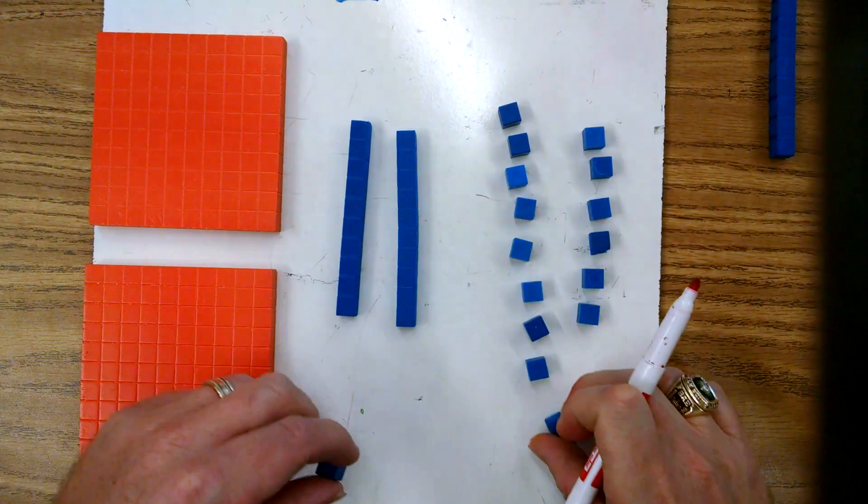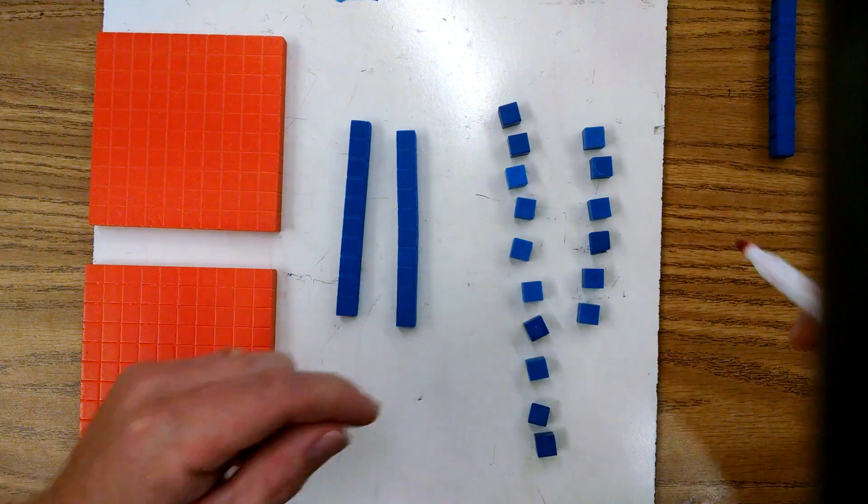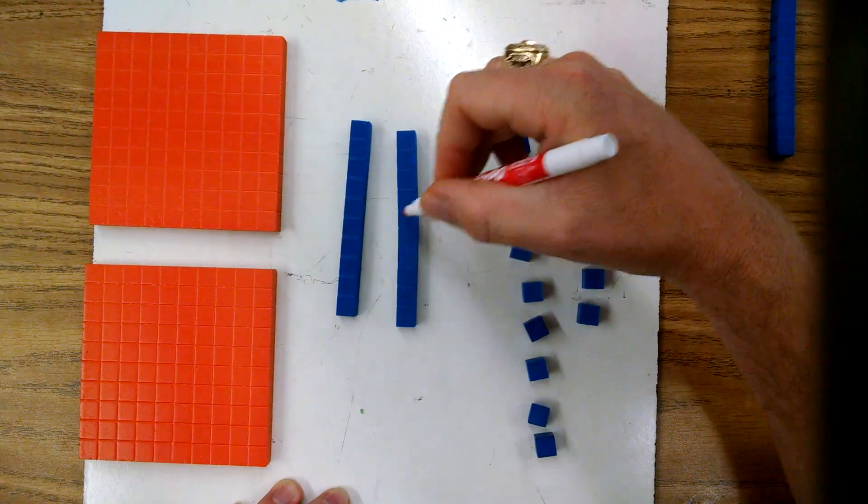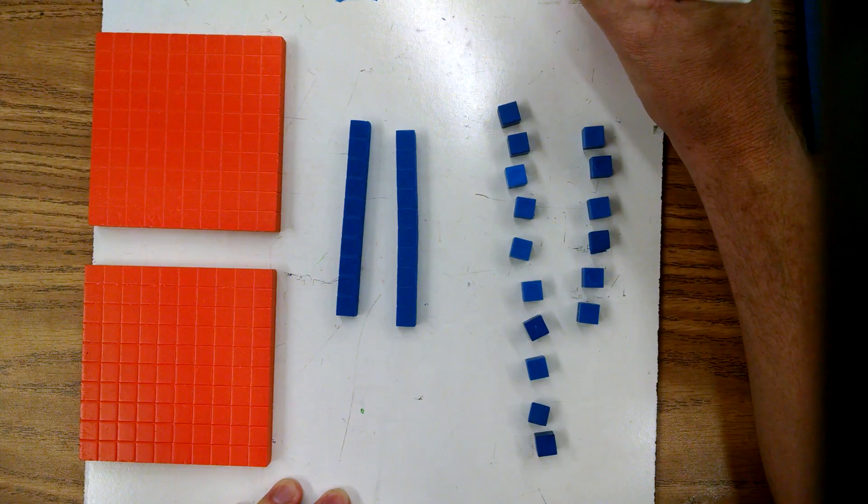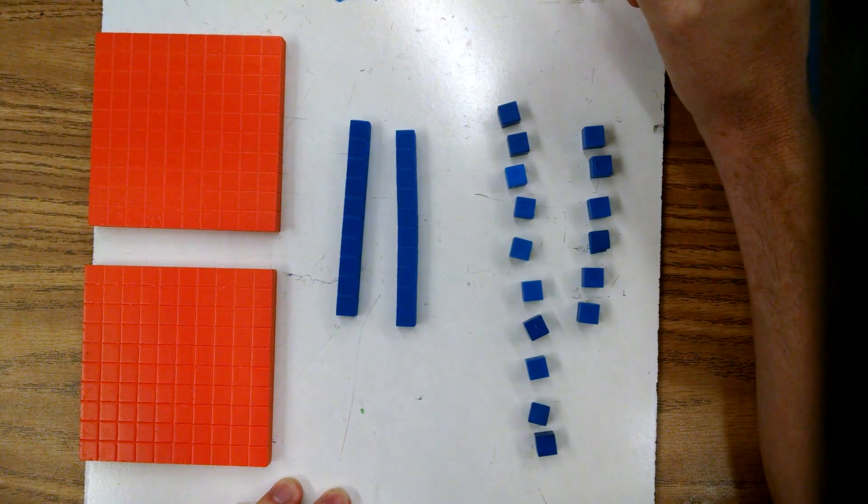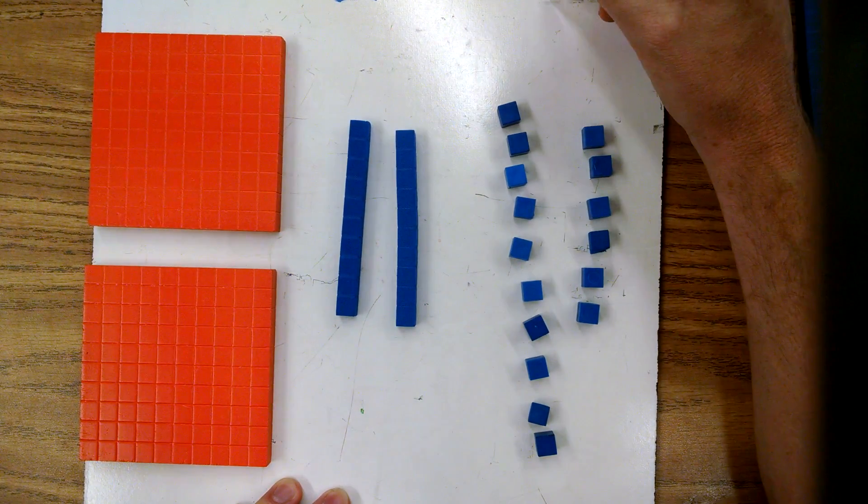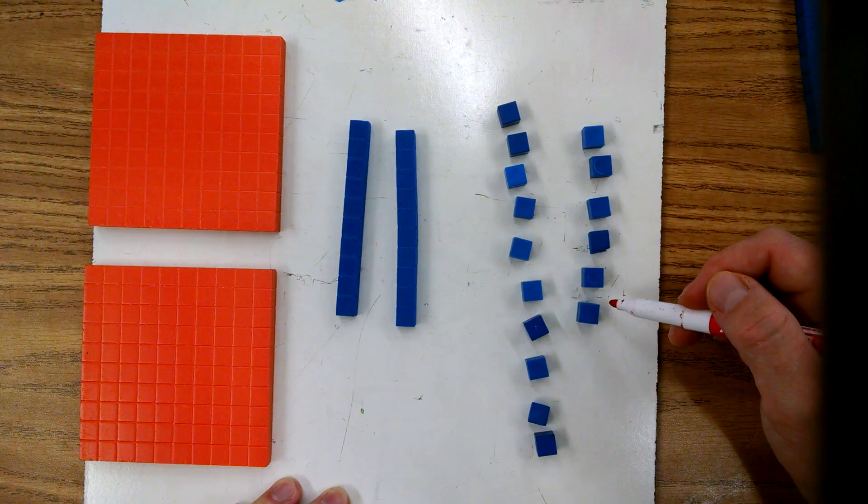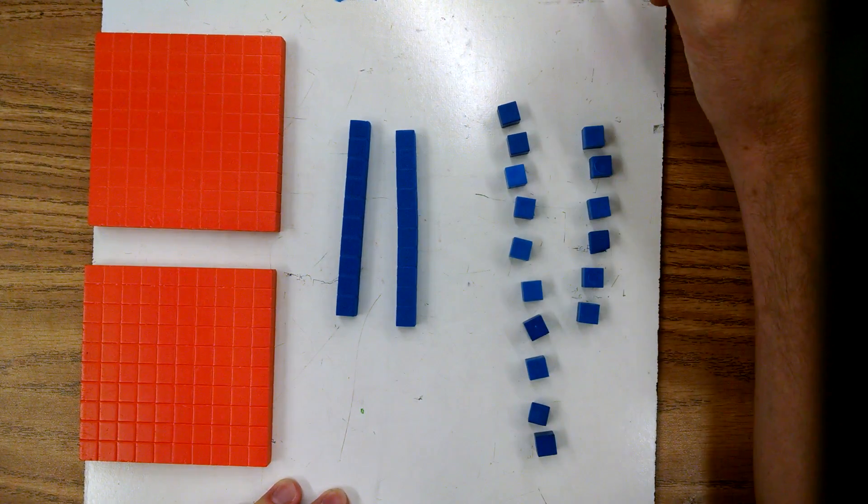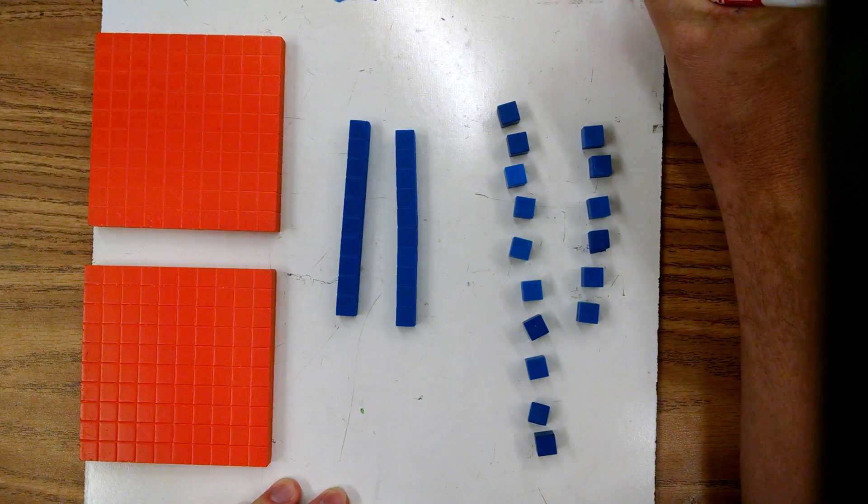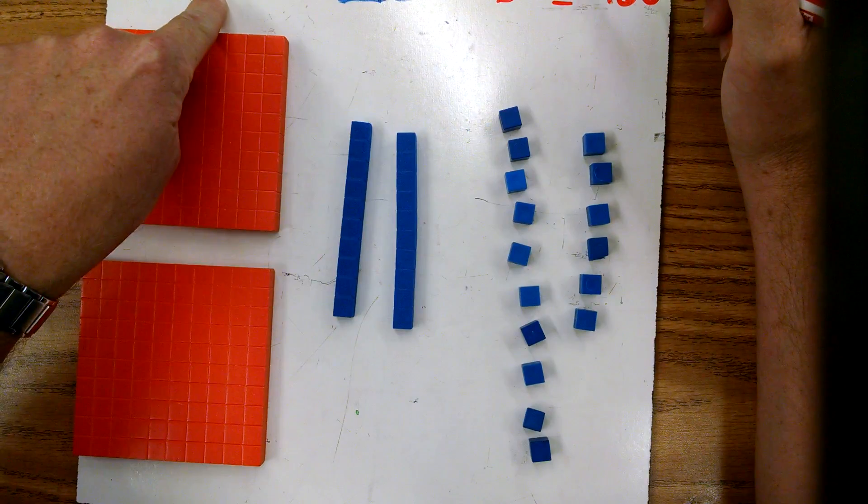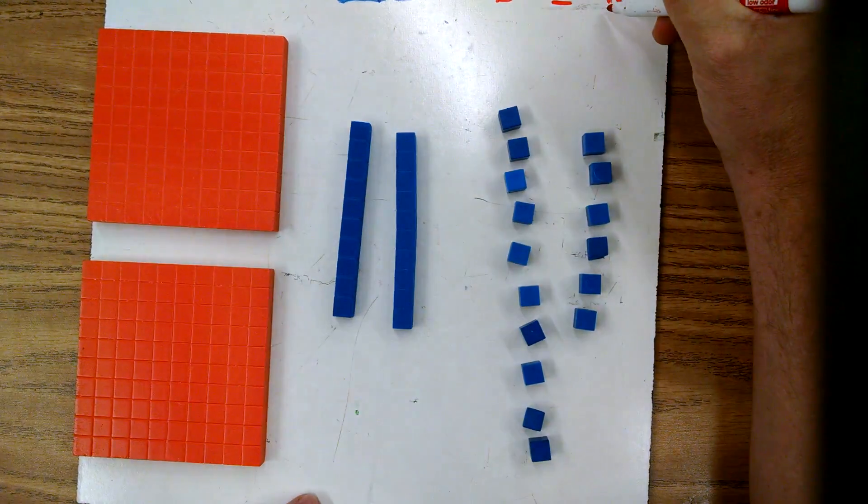So this time we still have our two hundreds, we have two tens this time instead of the three tens, and we have ten ones and six ones, which gives you 16. So now we have sixteen ones. You see what happened? Look at the difference between this one and this one. They both name the same number, but I'm using a different combination this time of ones, tens, and hundreds.